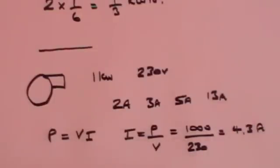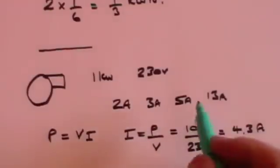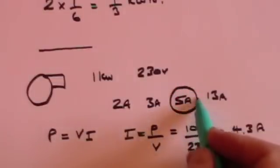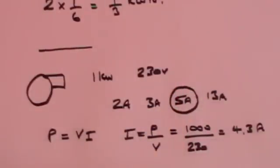So when the hairdryer is being used normally and it's functioning properly it will consume 4.3 amps so the appropriate fuse to use is the 5 amp because if the current rises to 5 amps or more something's gone wrong and you need to shut it off. No point putting a 3 amp fuse in because the 3 amp fuse will blow even if the device is working normally because normally it needs 4.3 amps.